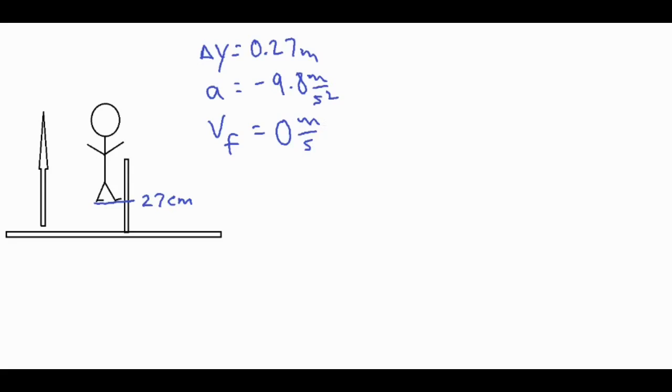Now using those numbers, what we can do is we can find the initial velocity of the person. And the way we can do that is we can use this formula right over here, which is V squared equals VI squared plus 2A delta Y. So let's go ahead and plug in our values into that formula and see what we get for our VI.